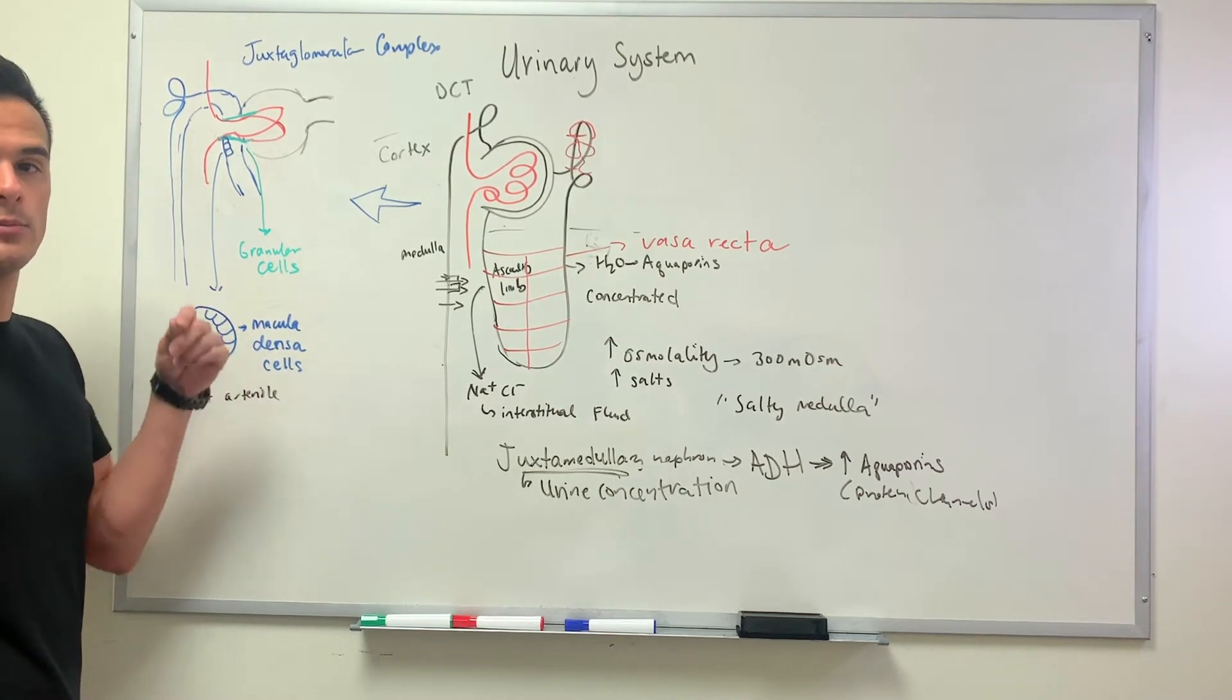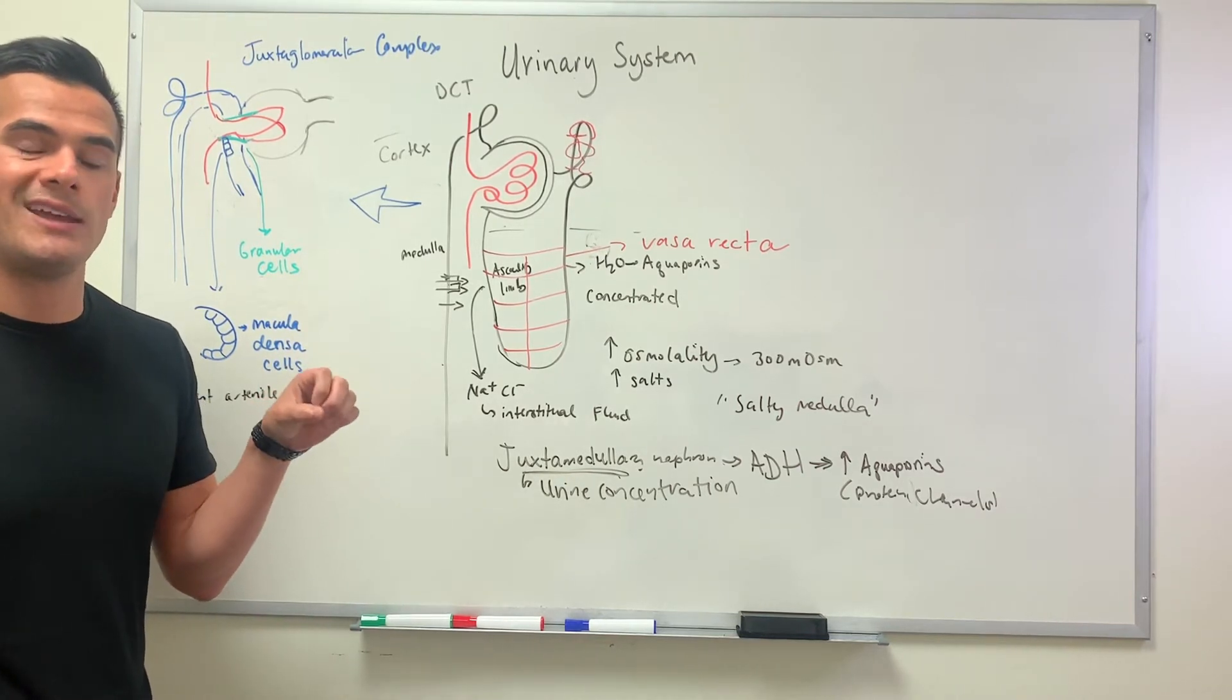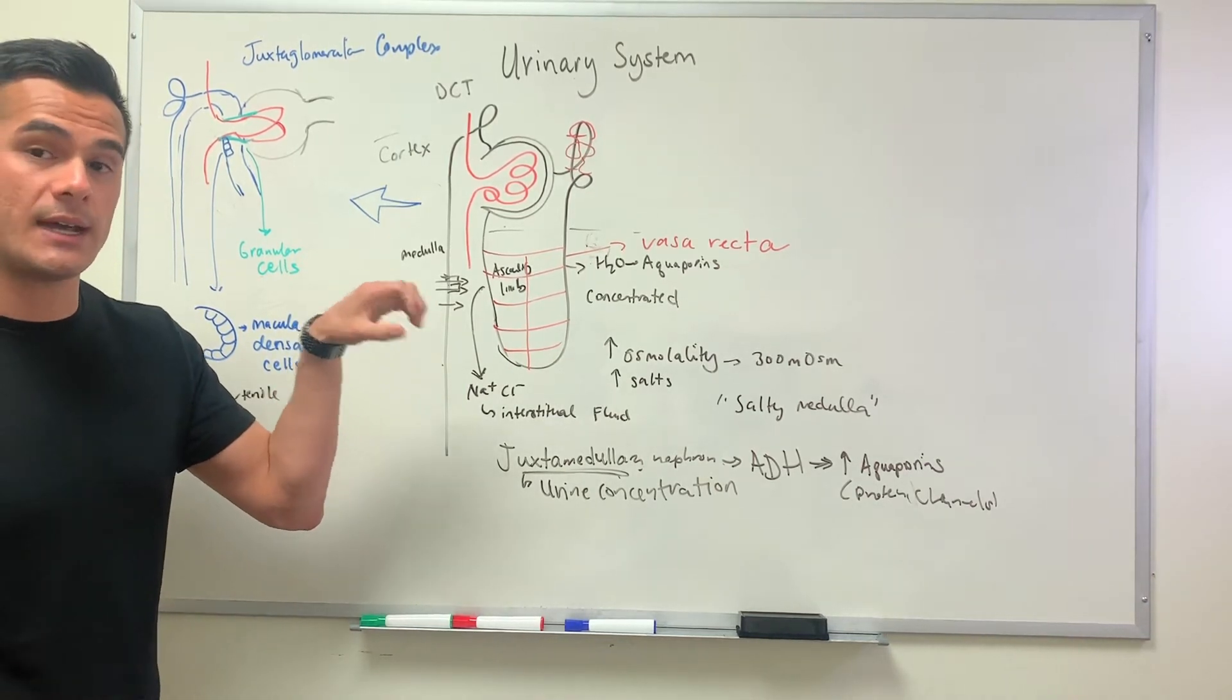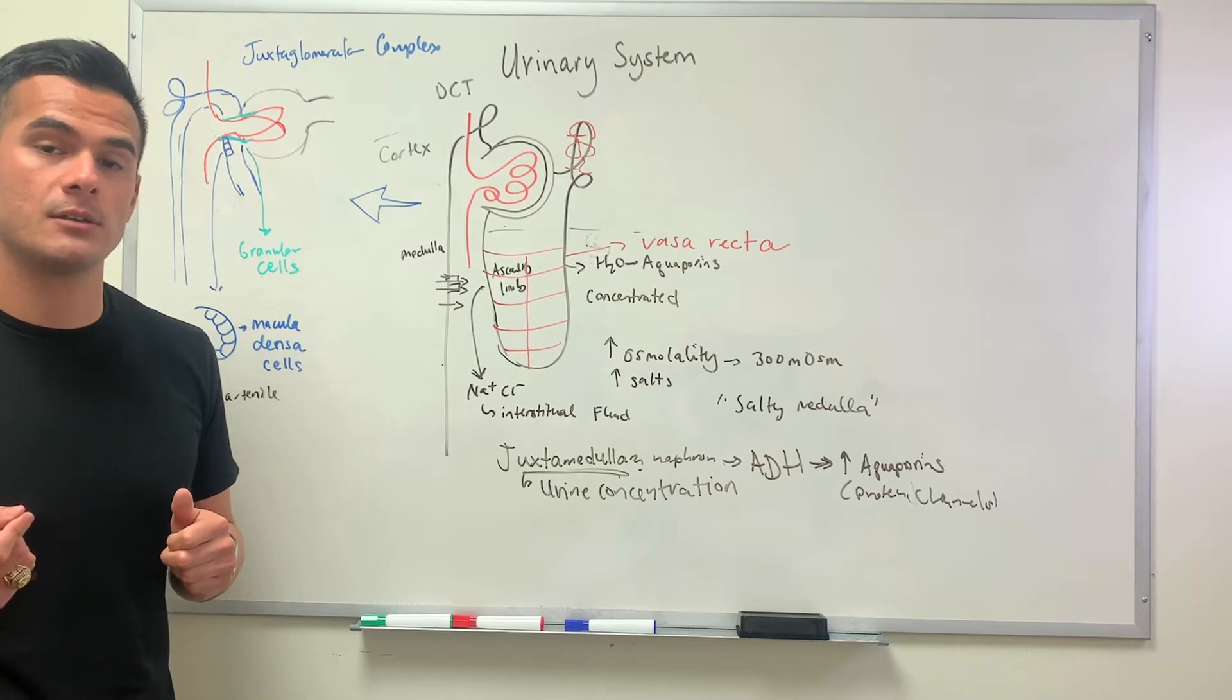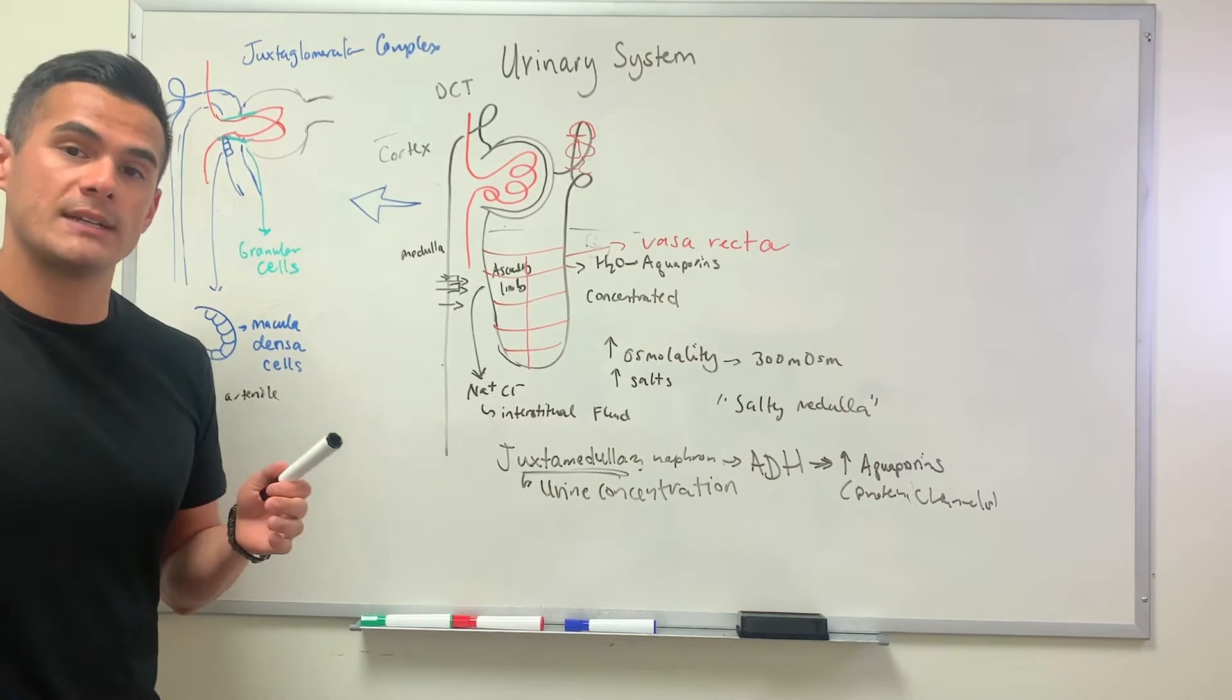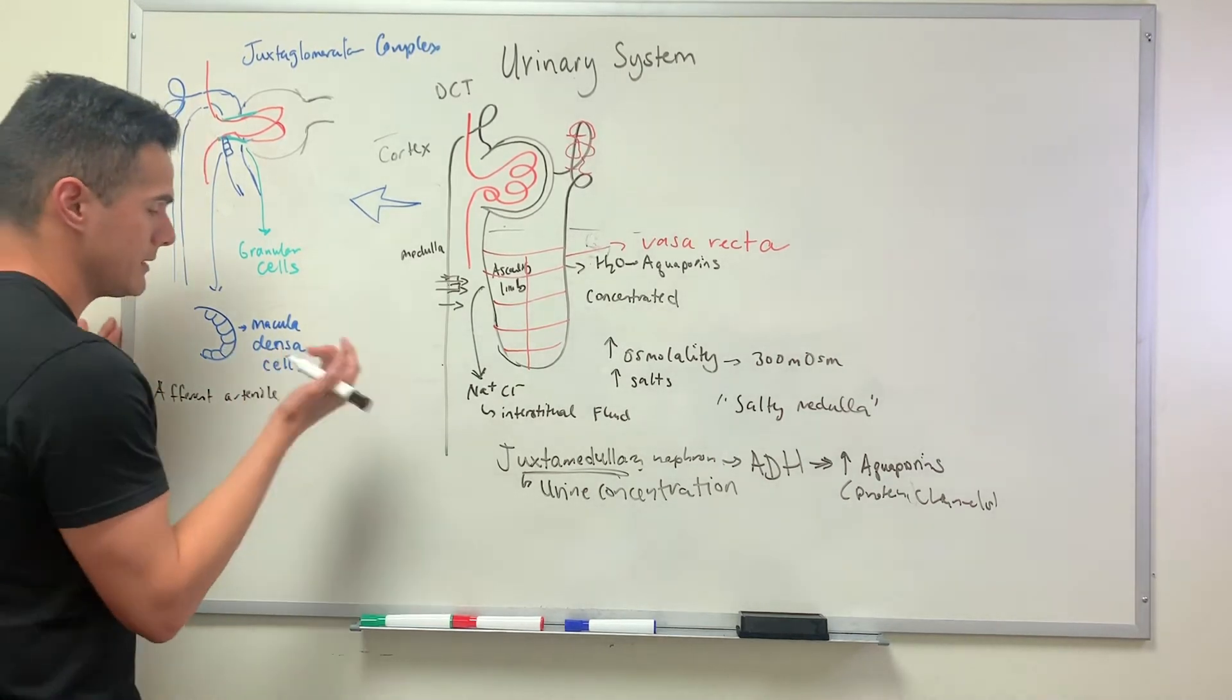What this is going to do is control the diameter of the afferent arteriole. The afferent arteriole can either dilate or it can constrict. Whenever it dilates it increases the glomerular filtration rate. Whenever it constricts it decreases the glomerular filtration rate. The glomerular filtration rate is the amount of fluid that's traveling through the glomerular capsule into the proximal convoluted tubule.